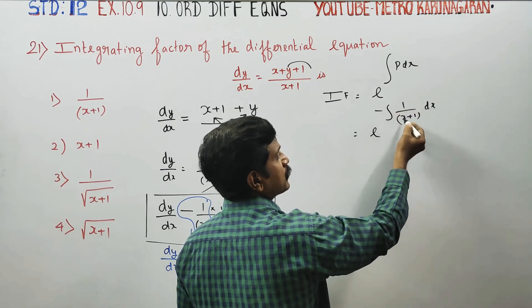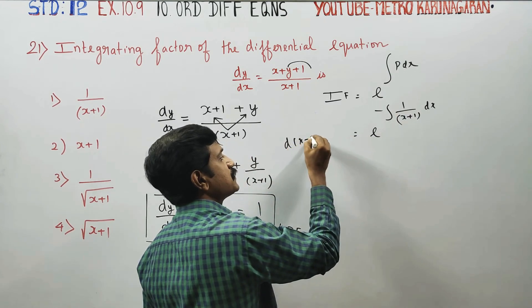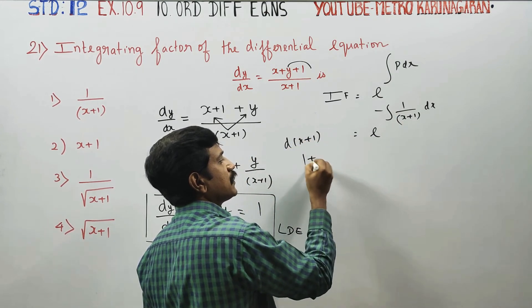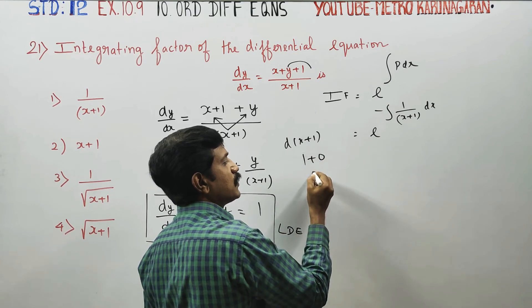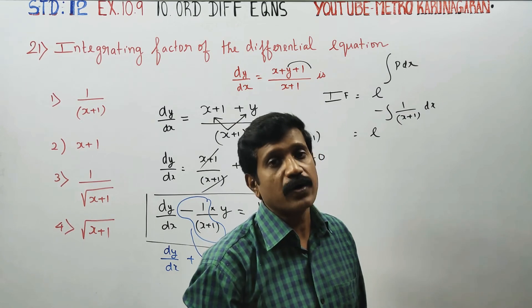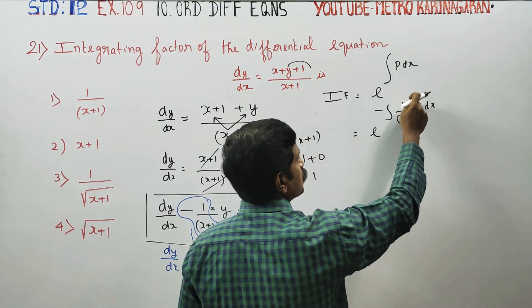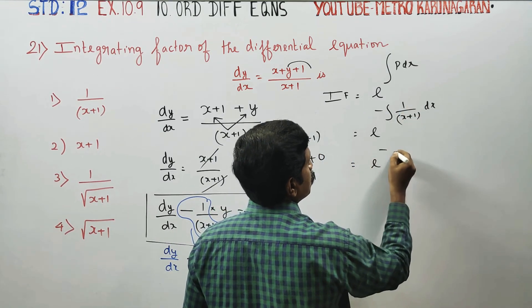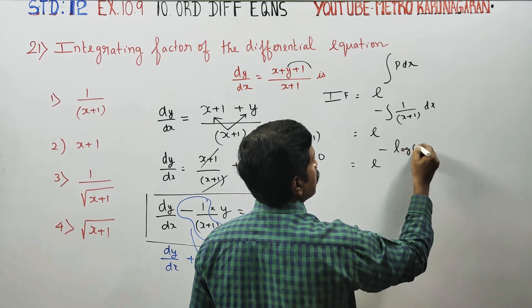The differential coefficient itself is in the numerator. Differentiation of x plus 1, if I differentiate x is 1, differentiate 1 is 0, so 1 plus 0 is 1. Then denominator appears in numerator, so it's logarithm formula. This gives minus logarithm of x plus 1.